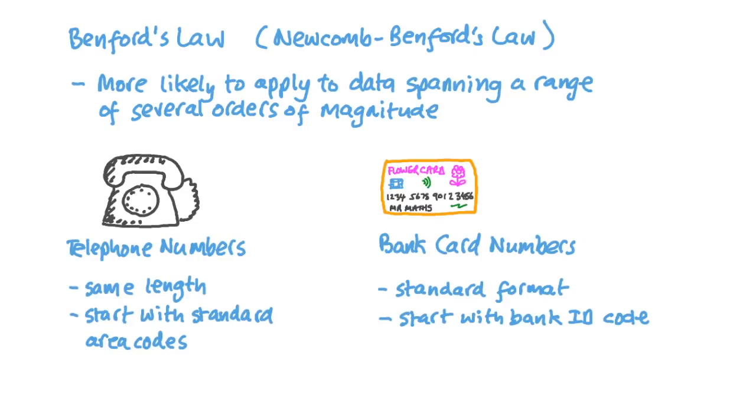For example, telephone numbers are all the same length and begin with specific area codes, and bank card numbers all have an industry identifier as their first digit, as part of the bank identification number. So we wouldn't expect the law to apply when first digits are constrained by such human-defined rules.